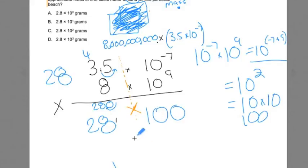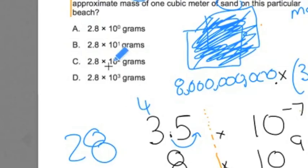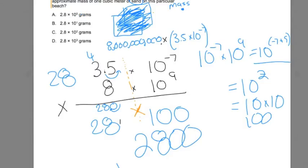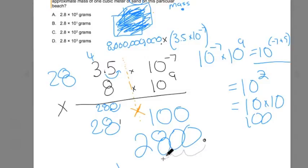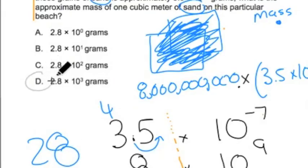28 times 100 is 2,800. Looking back at the answer choices, I don't see 2,800 listed as is, so I need to represent it in scientific notation. I move the decimal over one, two, three spaces and rewrite this as 2.8 times 10 to the third power. The answer is D.